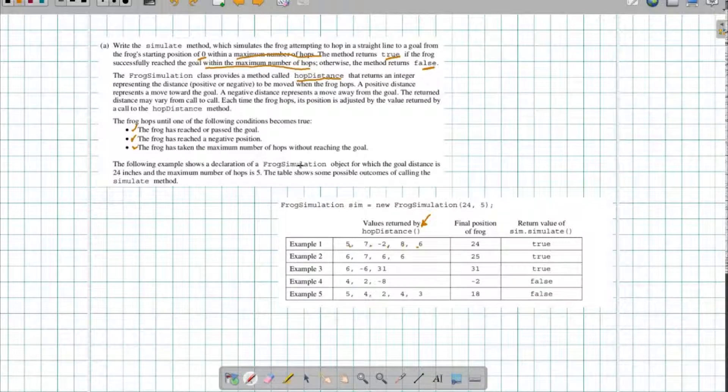The following example shows a declaration of a frog simulation object for which the goal distance is 24 inches and the maximum number of hops is five. So here, notice I've got 5, add 7 makes 12, take away 2 makes 10, 10 and 8 is 18, 18 and 6 is 24. We reach our goal, we return true.